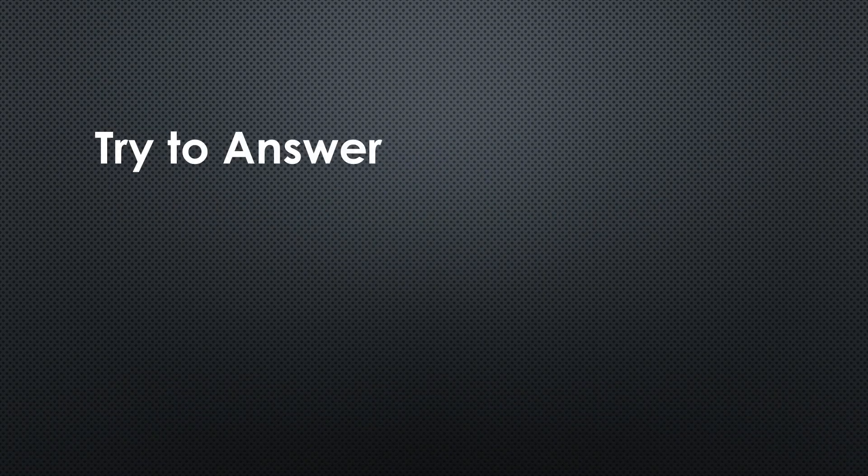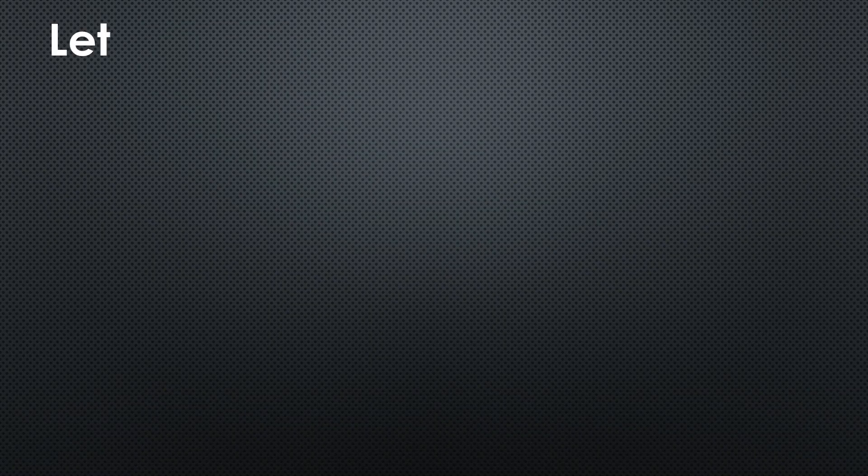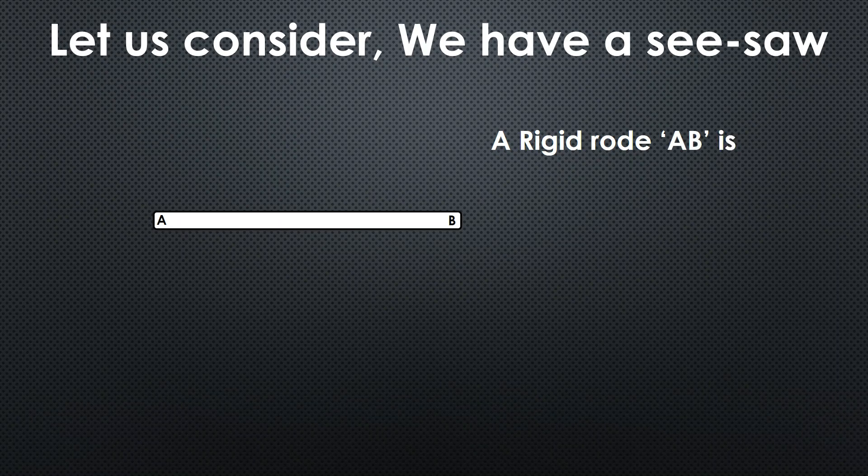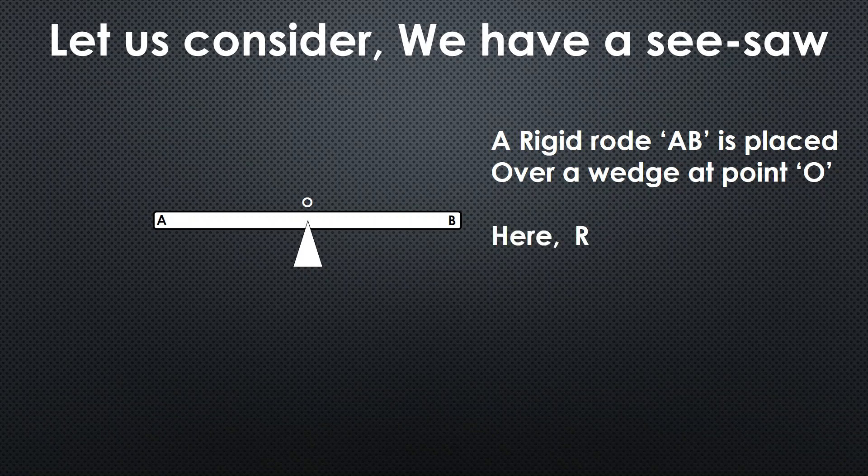Please try to answer this question and check your relativity knowledge. So let's start. Let us consider we have a seesaw. A rigid rod AB is placed over a wedge at point O. Here R is the distance of the center point O from any of the edge of this rod.